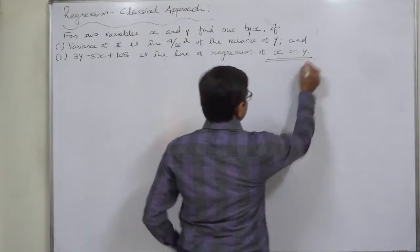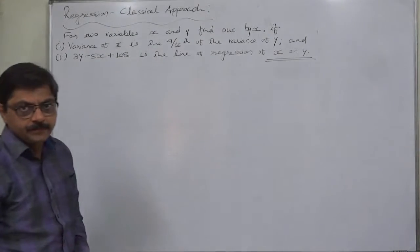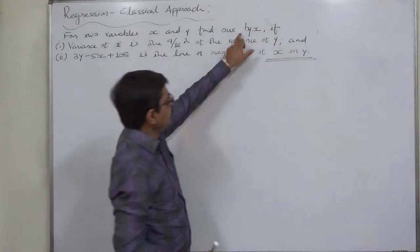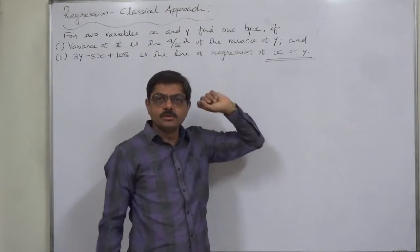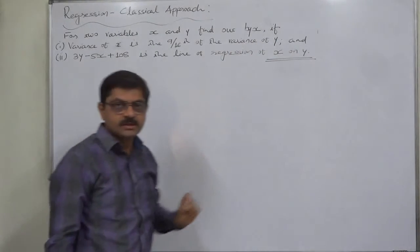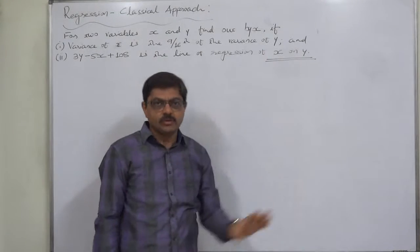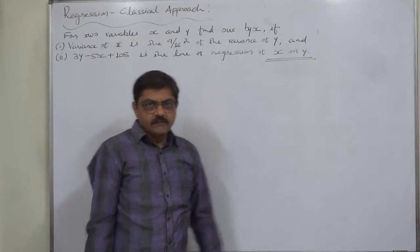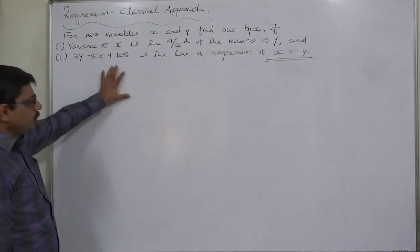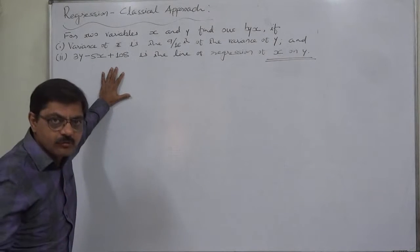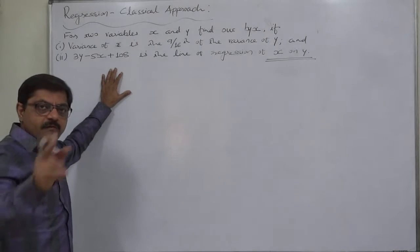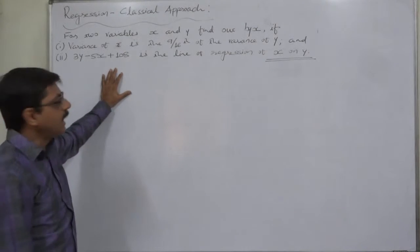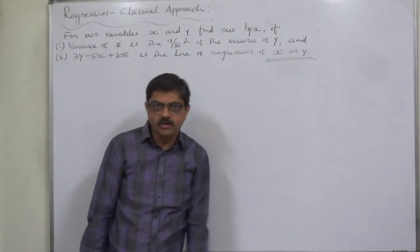Yes, there is no mistake - this is the line of regression of x on y. Now we need to find out b_yx, that is the coefficient of regression of y on x, but we have the line of regression of x on y. We know that from the line of regression of x on y we can find out b_xy, the coefficient of regression of x on y. Then how can we find b_yx from that line of regression?